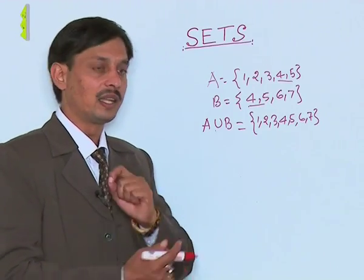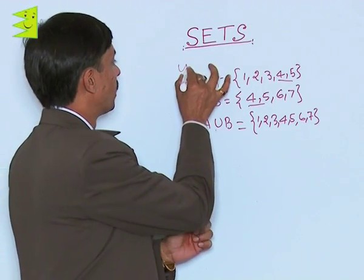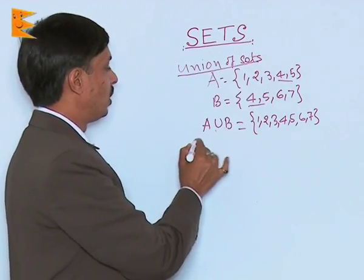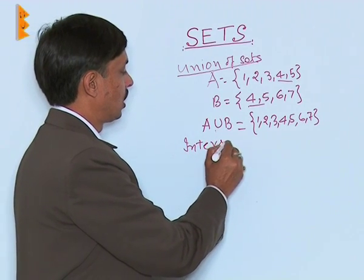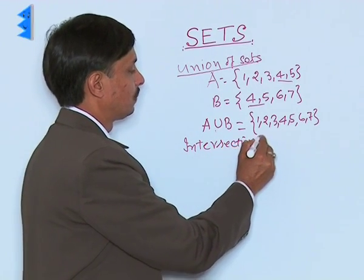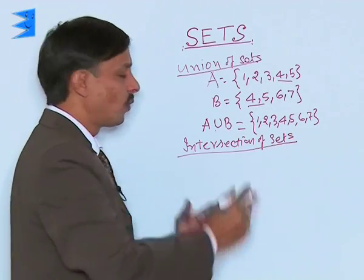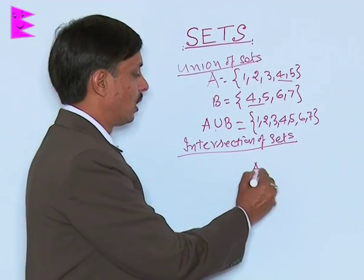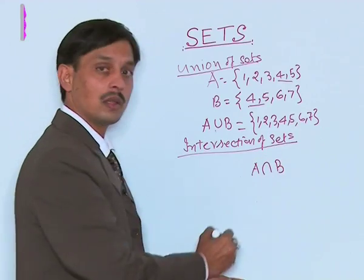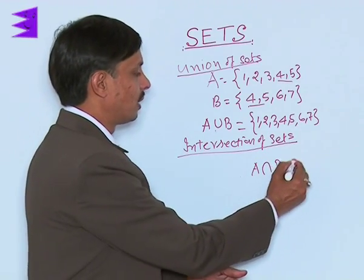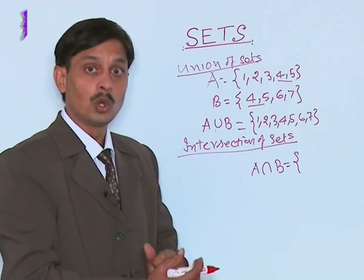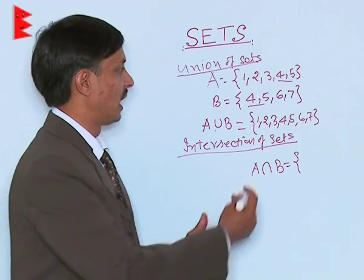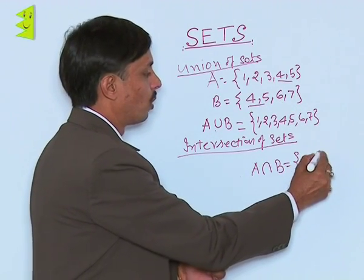The second major operation is the intersection. Now I want to explain what is the intersection of sets. The symbol is A intersection B. A intersection B means we need to write only those elements which are common in both sets or more than two sets. The common elements here are 4 and 5.